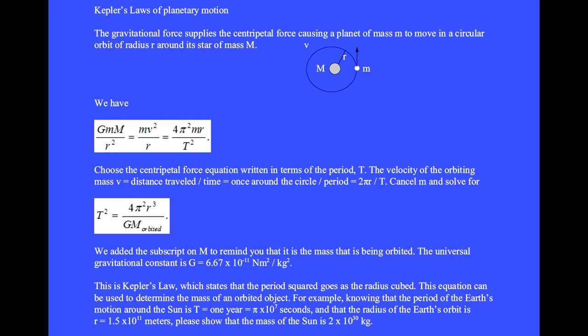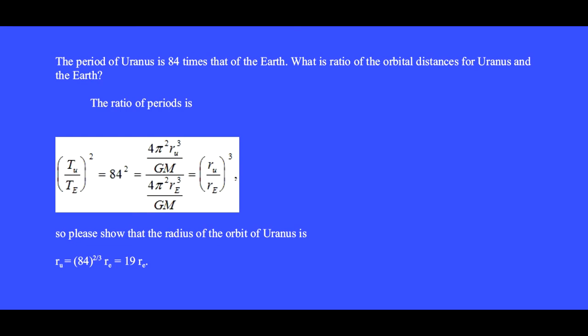Knowing that the period of the Earth's motion around the Sun is 1 year, which is about pi times 10 to the 7th seconds, and that the radius of the Earth's orbit is 1.5 times 10 to the 11th meters, please show that the mass of the Sun is 2 times 10 to the 30th kilograms. The period of Uranus is 84 times that of the Earth. The ratio of periods T_U over T_E squared equals 84 squared. Putting 4 pi squared r_U cubed over GM in the numerator and 4 pi squared r_E cubed over GM in the denominator, we cancel the common factors to get r_U over r_E cubed. Please show that the radius of the orbit of Uranus is 84 to the 2/3 power times r_E, which equals 19 r_E.